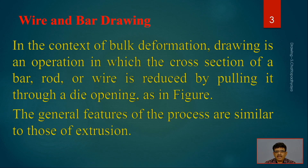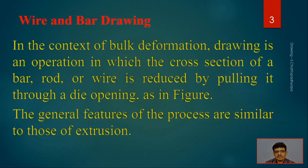Wire and bar drawing is in the context of bulk deformation — where volume is more and surface area is less. Drawing is an important operation in which the cross section of a bar, rod, or wire is reduced by pulling it through a die opening, as shown in the previous figure. The general features of the process are very similar to extrusion; the only difference is that the wire or bar is pulled instead of pushed by a ram.